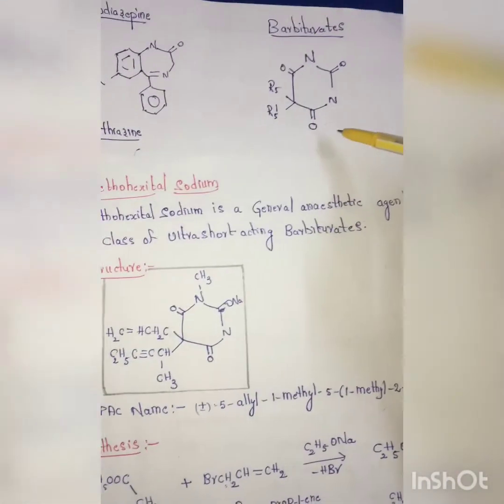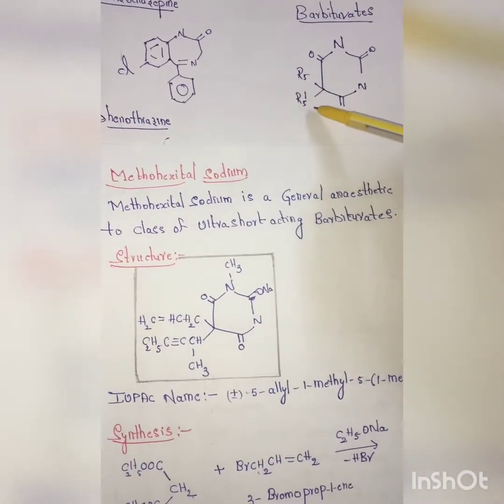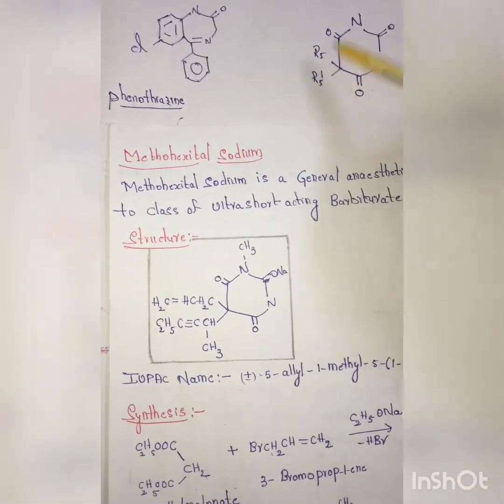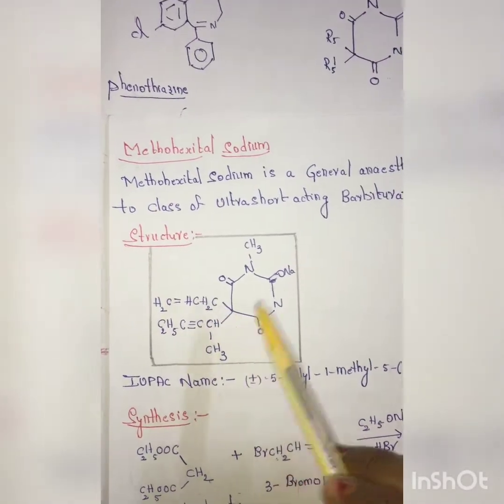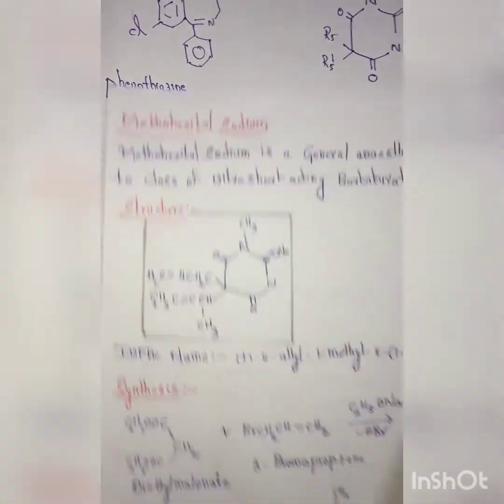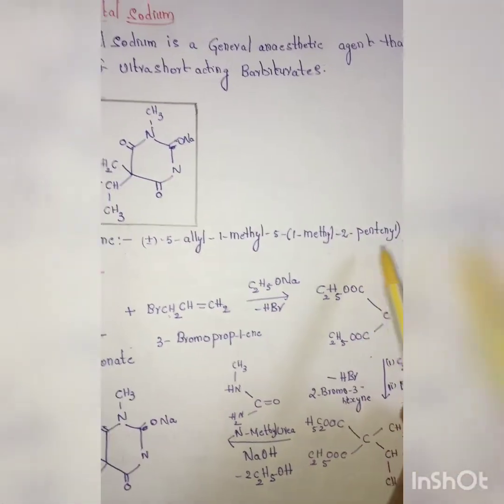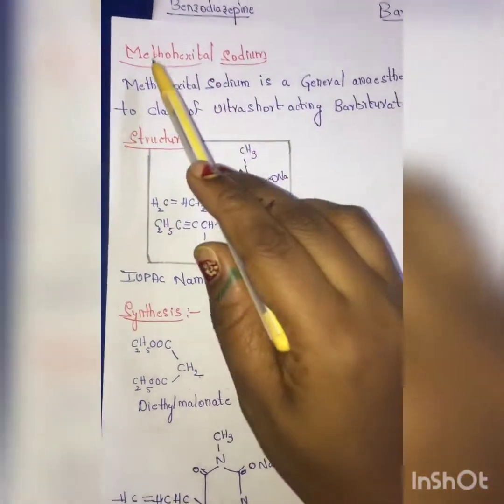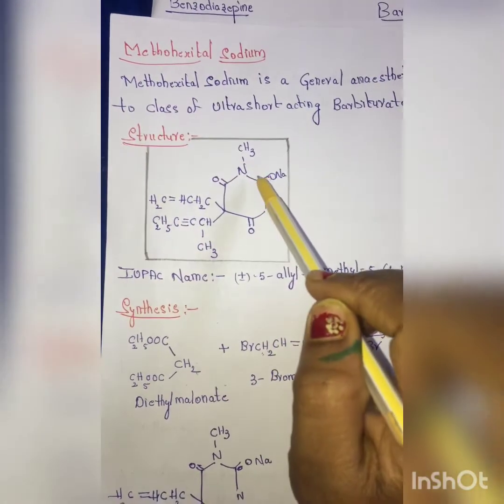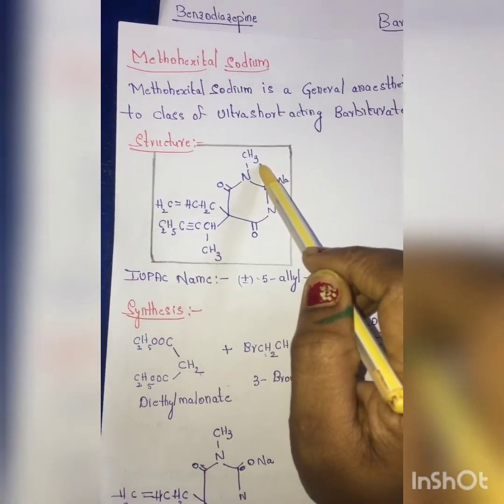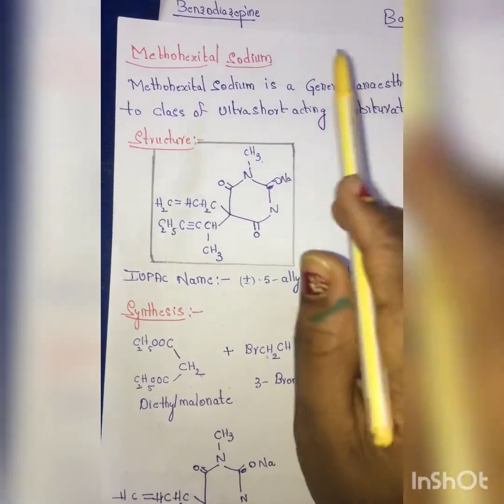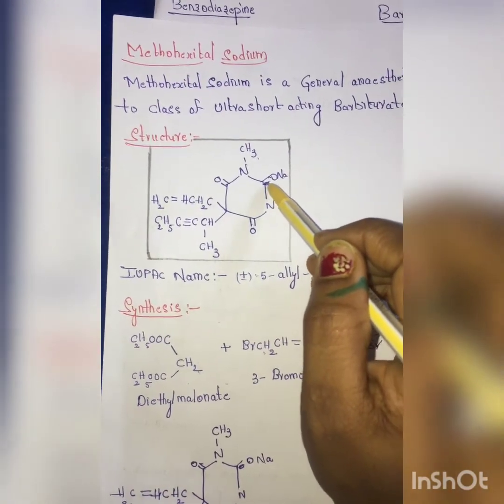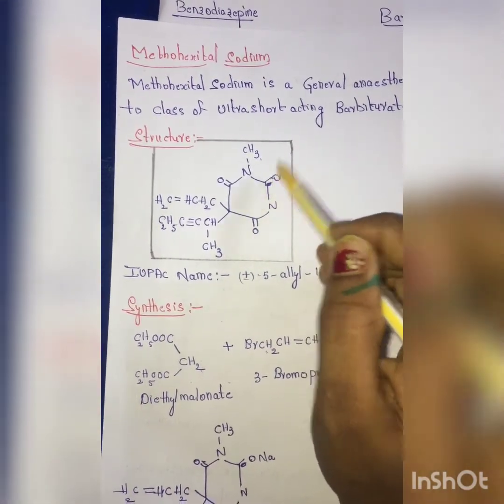So this is the general structure where R5 and R5 dash will differ. Here R5 will be allyl group and R5 dash will be 1-methyl-2-pentynyl group. So this is the structure for the methohexital sodium. And R1 will be having NCH3 methyl group, so this is the methohexital sodium structure.